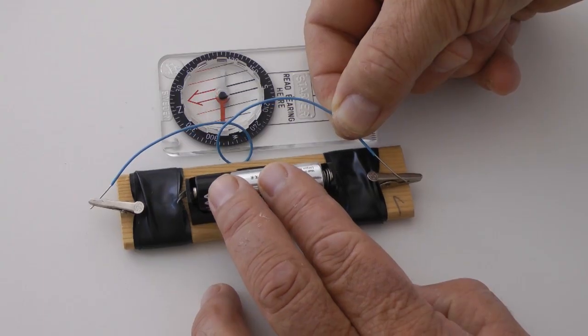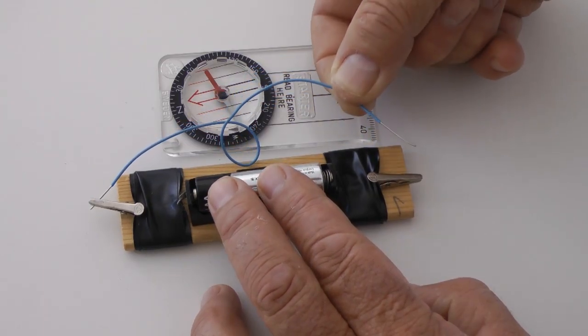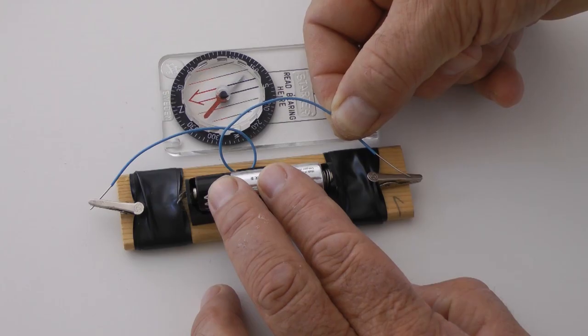The magnetic needle in the compass moves when I complete the circuit, revealing the electromagnetic field.